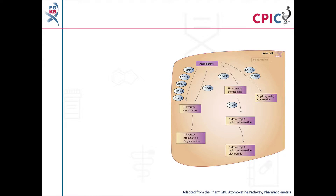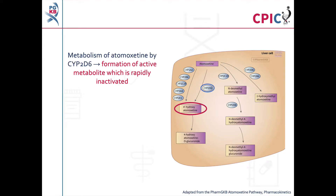Atomoxetine is a selective norepinephrine reuptake inhibitor, which is approved for the treatment of Attention Deficit Hyperactivity Disorder or ADHD. It is metabolised in the liver to form a number of metabolites. Central to this guideline is the metabolism of atomoxetine by CYP2D6 to the metabolite 4-hydroxyatomoxetine. Although 4-hydroxyatomoxetine is an active metabolite, it is only found at very low concentrations in the body and is rapidly inactivated by glucuronidation. Therefore, it is not considered to exert a substantial clinical effect.